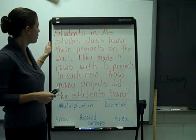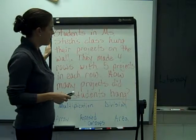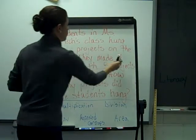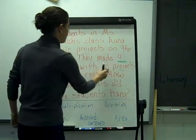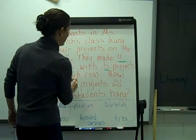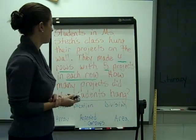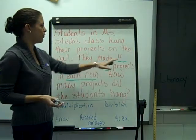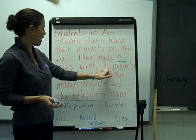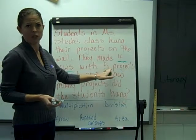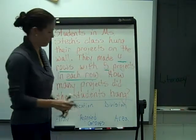With this problem, students in Ms. Steck's class hung their projects on the wall. They made 4 rows with 5 projects in each row. How many projects did the students hang? Well, if you have 4 rows and 5 in each row, that gives me a clue that I'm going to be multiplying, not dividing out into groups.